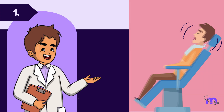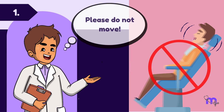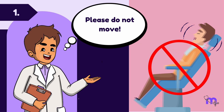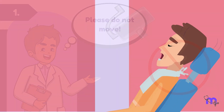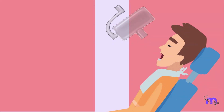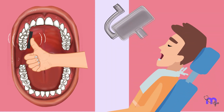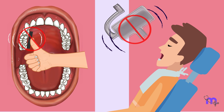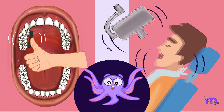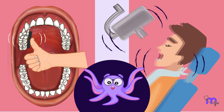The first thing to do is instruct the patient to remain still during the exposure. Additionally, ensure that the tube head and the film, once positioned, do not shake. If they are not stabilized, a blurred image is obtained.